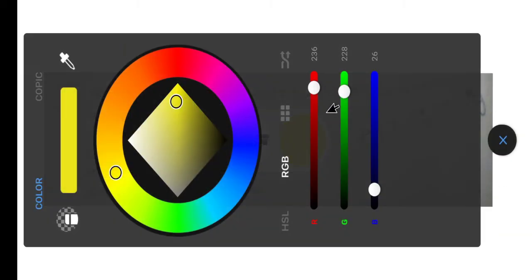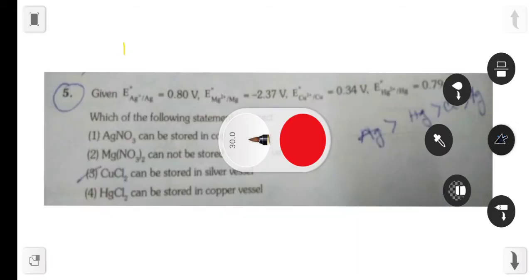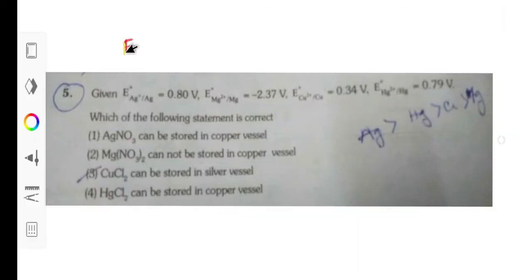E naught cell is a reduction potential. So the reduction potential value, meaning this E naught value, is much higher, then it is reduced.